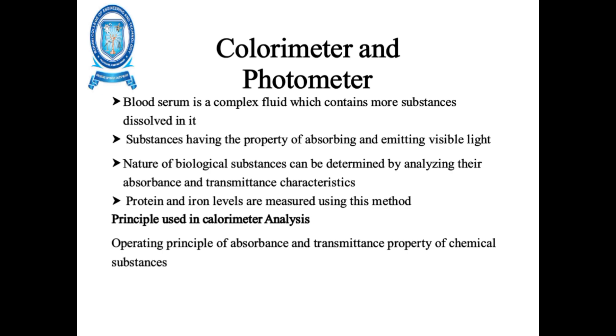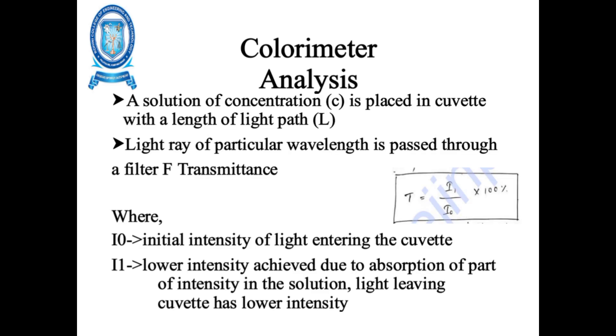Principle used for colorimeter analysis: operating principle of absorbance and transmittance property of chemical substances. Colorimeter analysis: a solution of concentration C is placed in a cuvette with a length of light path L.